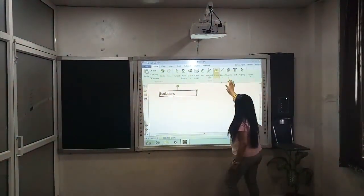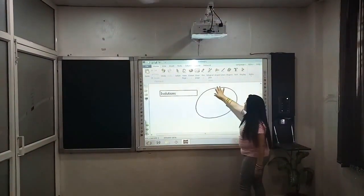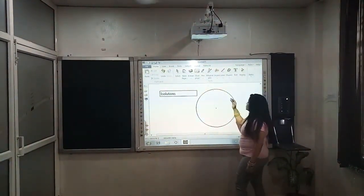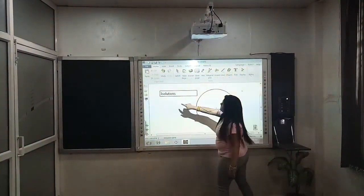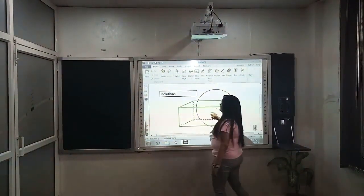Then we have given shape recognition also. Like a rough diagram, it will get converted into a geometrical shape. Then some of the pre-filled shapes I have given. This way. You can see.